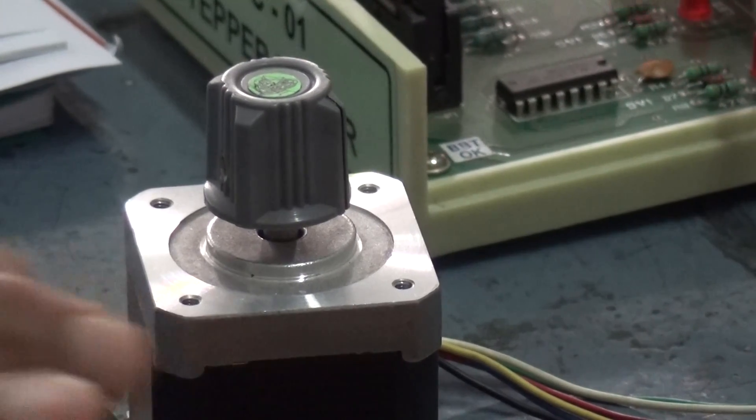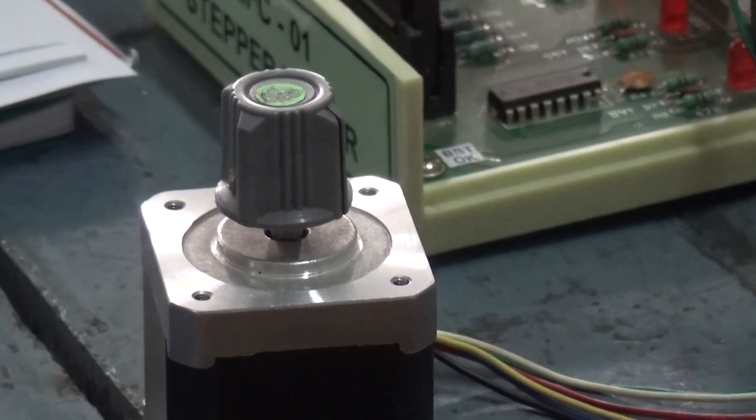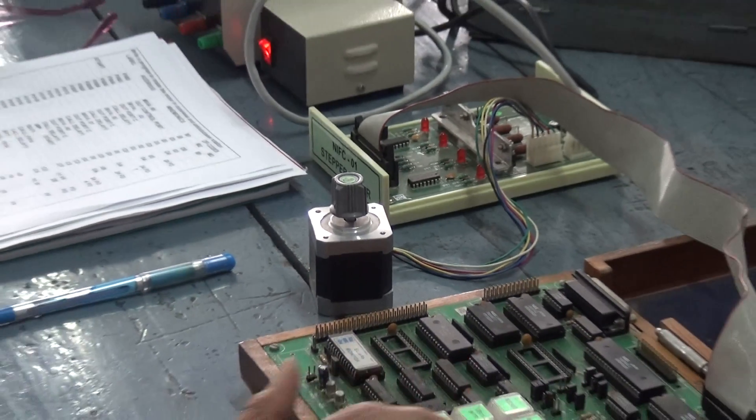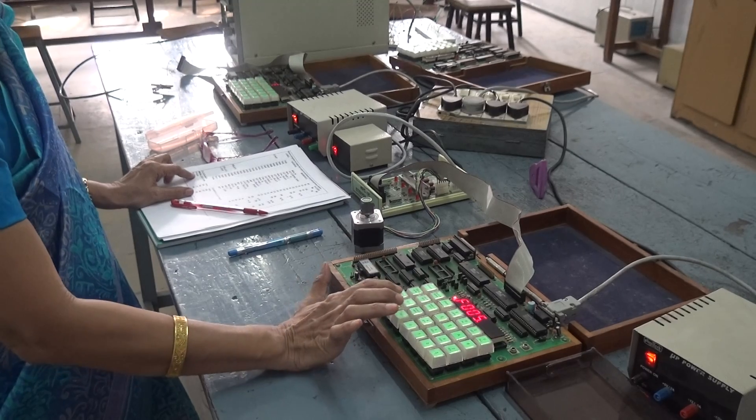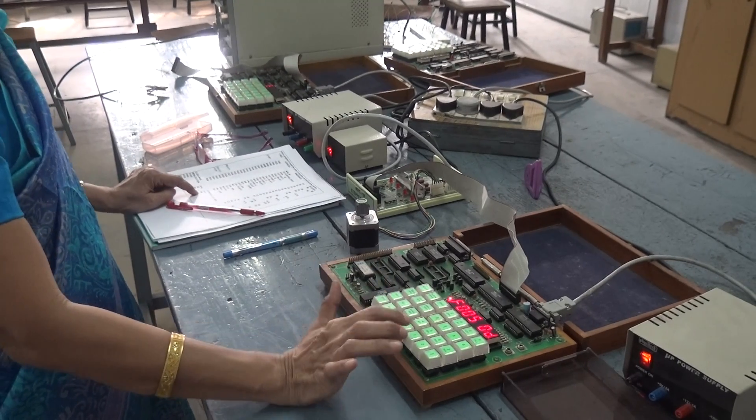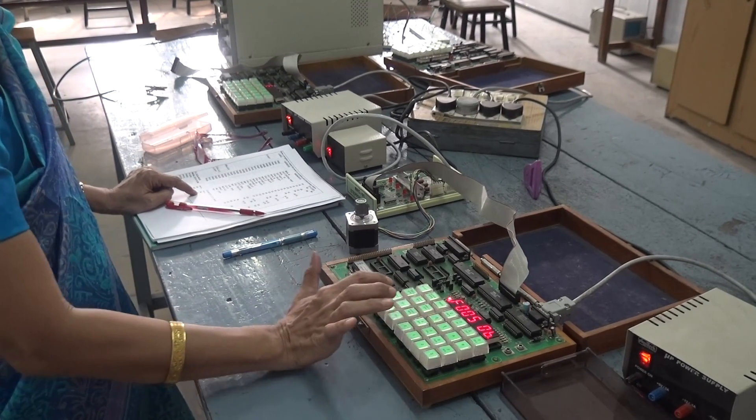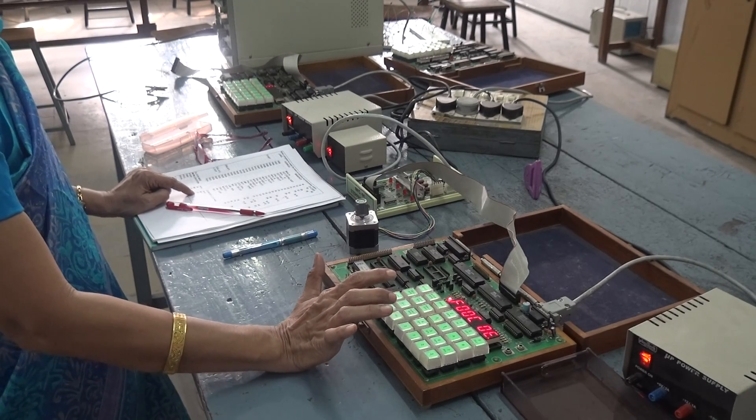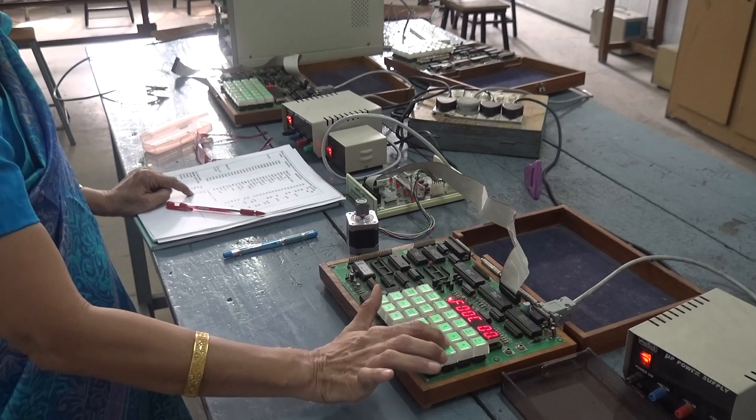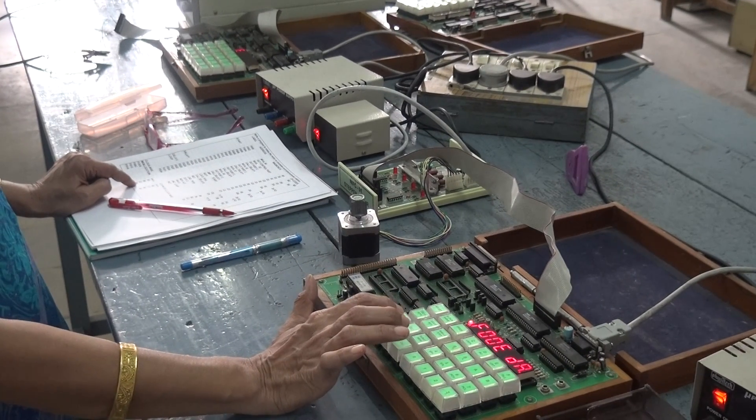Now, to speed the data in the other direction, you just go to the appropriate locations F005. 0D is there. Now, we will give 0B. Next location is 0C. 0E was there. Now, we will give 07.